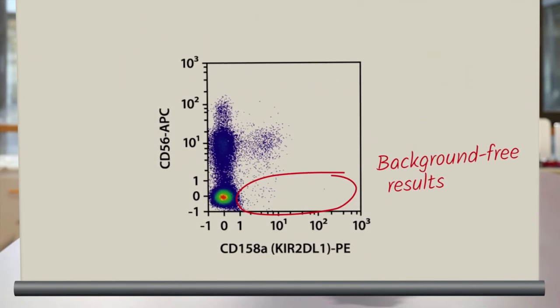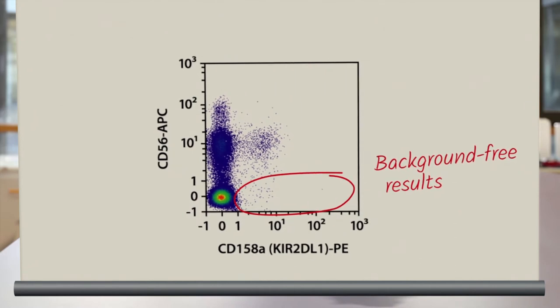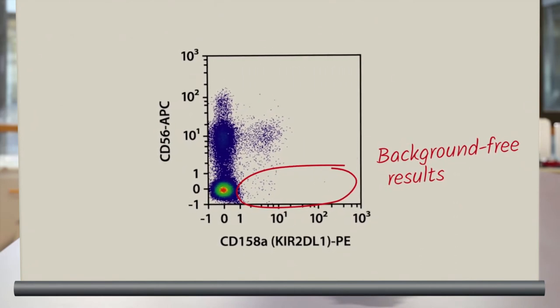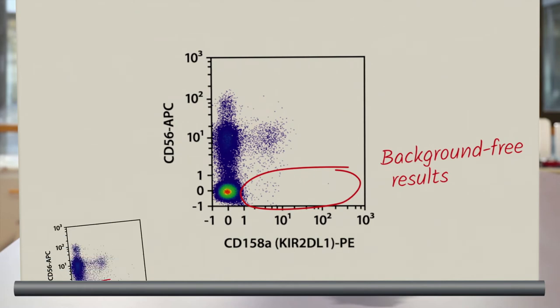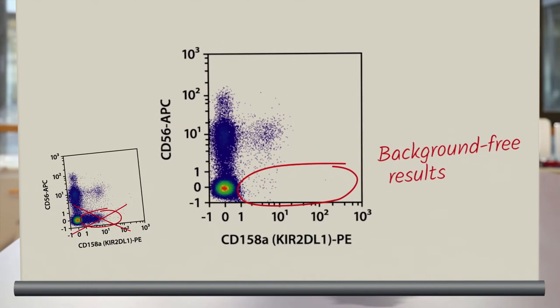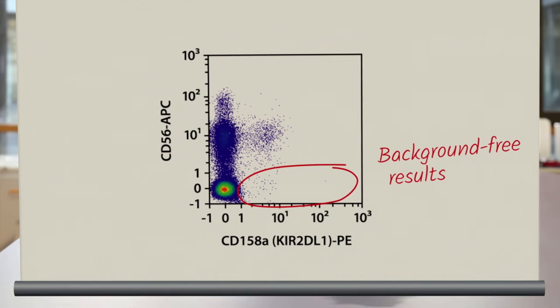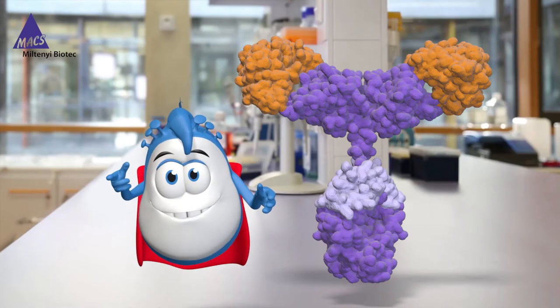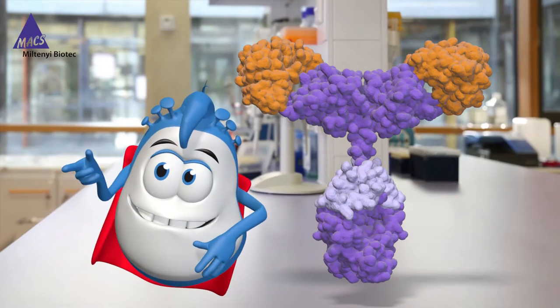This is what comes out for my friend in the lab. Clean results. When using reaffinity antibodies, there is no background signal, even without the use of FCR blocking reagents. Isn't that what you want? Of course it is! But we didn't stop here.